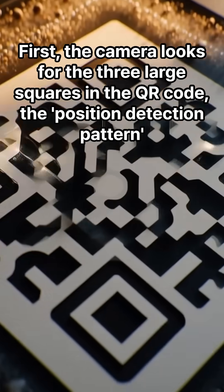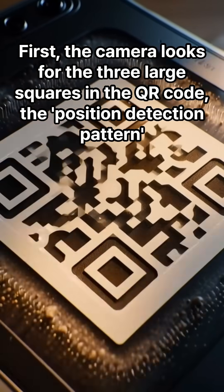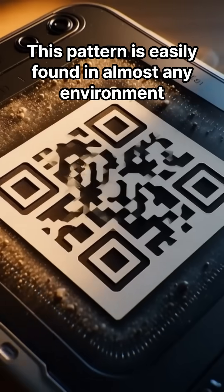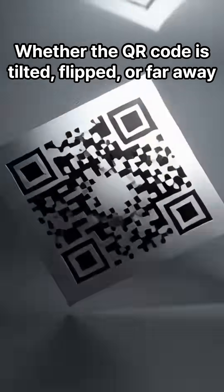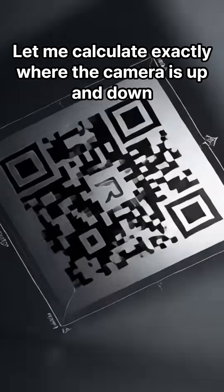First, the camera looks for the three large squares in the QR code, the position detection pattern. This pattern is easily found in almost any environment. Whether the QR code is tilted, flipped, or far away, it can calculate exactly where the camera is positioned.